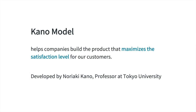The Kano model is an approach to prioritize features on a product roadmap based on the degree to which they're likely to satisfy customers. This is a model developed by Professor Noriaki Kano, who was a professor at the University of Tokyo. The key goal of the Kano method is basically helping companies prioritize customer satisfaction — it helps you build the product that maximizes the satisfaction level for your customers.